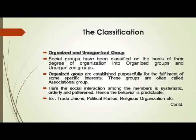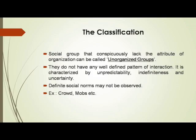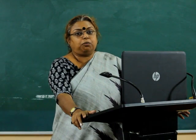The next classification is organized and unorganized groups. Organized groups are established purposefully for the fulfillment of specific interests; they are often called associational groups. Social interaction among members is systematic, orderly, and patterned, making behavior predictable — for example, trade unions, political parties, and religious organizations.